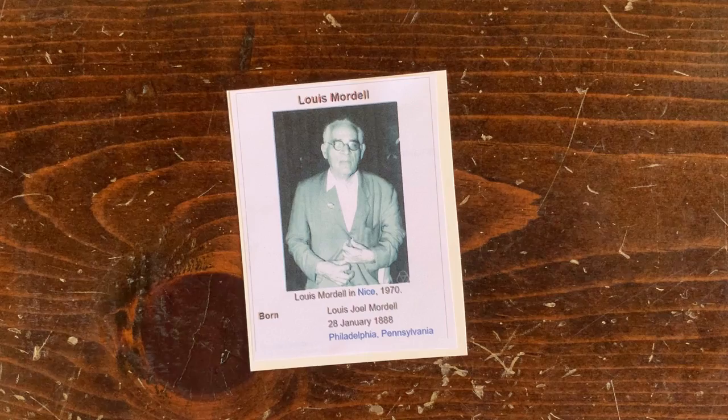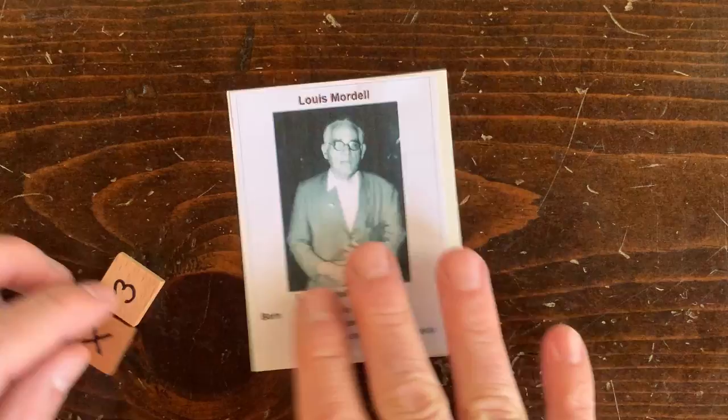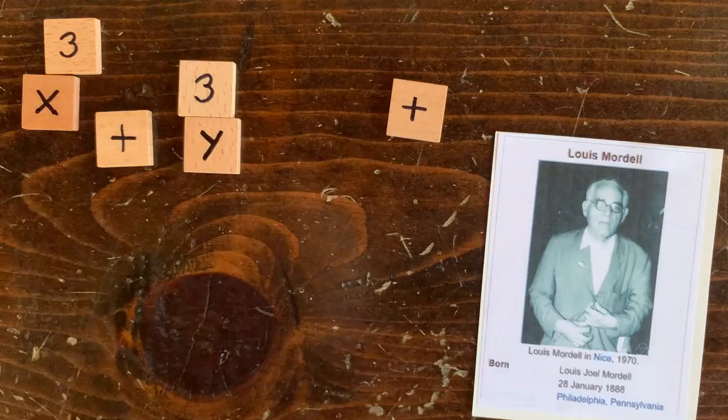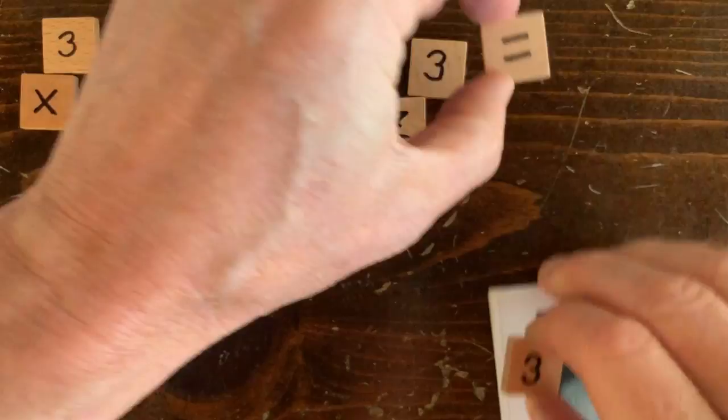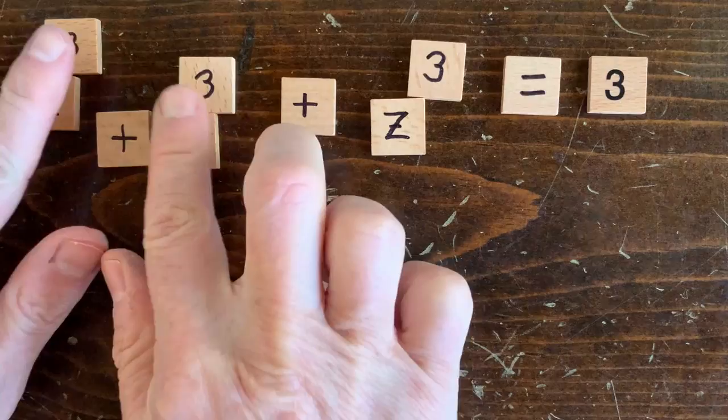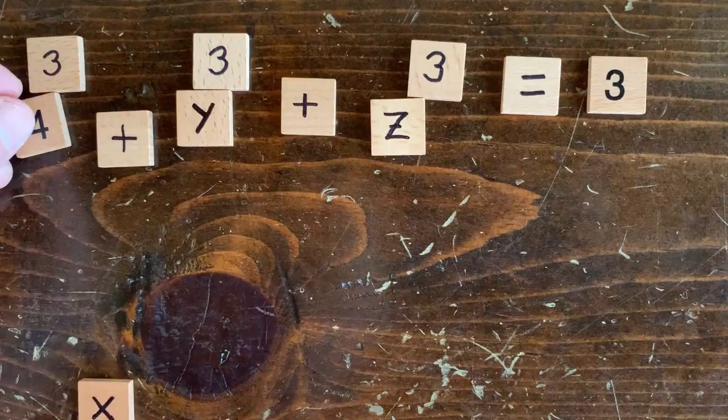Let me tell you the strange story of another conjecture. Back in 1951, a guy named Louis Mordell considered a very old equation. X cubed plus Y cubed plus Z cubed equals 3. He observed that there only seemed to be two solutions. The first is 1 cubed plus 1 cubed plus 1 cubed equals 3. That's the easy one. The second one is 4 cubed plus 4 cubed plus negative 5 cubed equals 3.